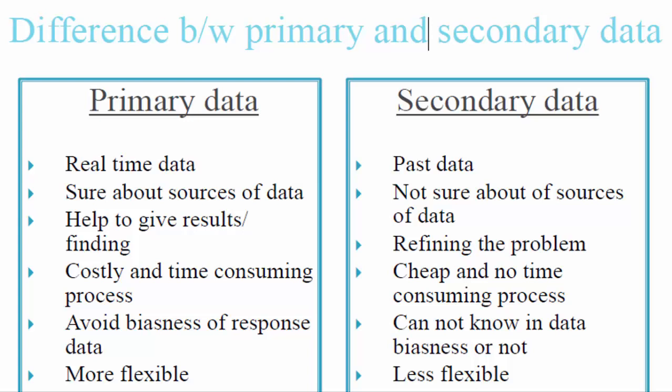Both types help to give results and findings. Primary data is costly and time consuming, and becomes even more challenging if the study has not been done before. Secondary data, in contrast, is cheap — or at least affordable — because you can go to the internet, do your research, and get what you need. Primary data is also more flexible.